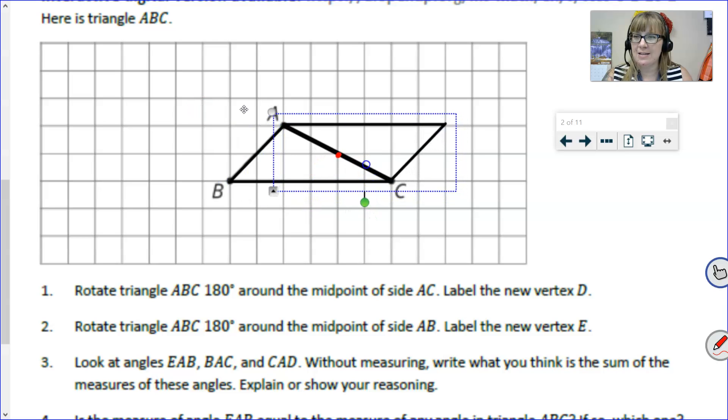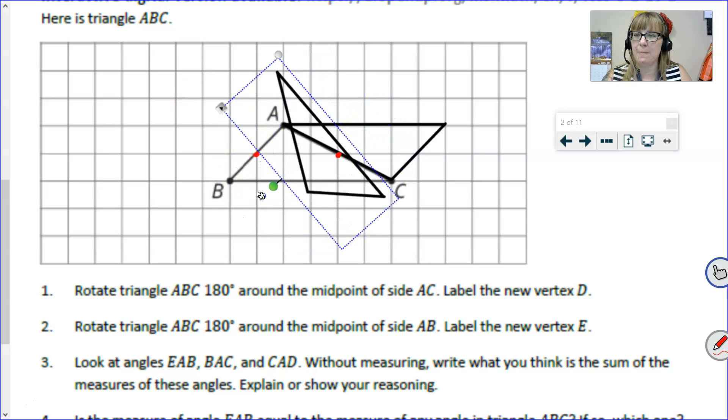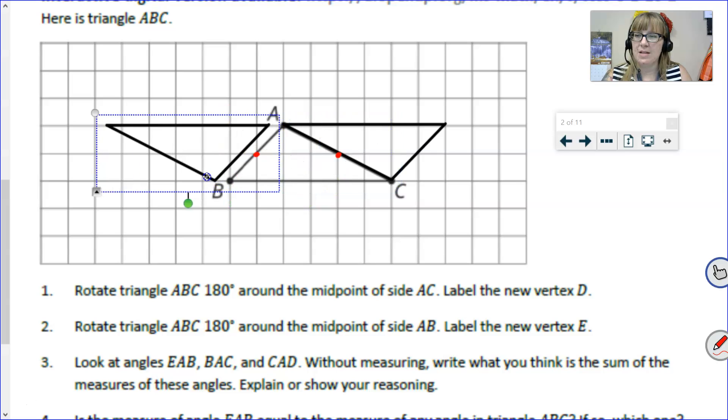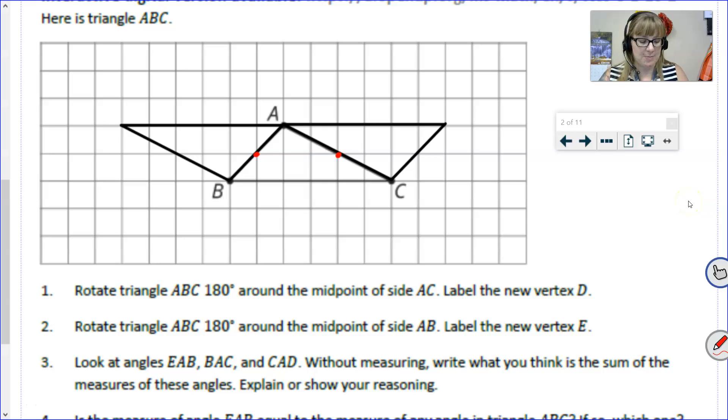I'm rotating it now, and of course I'm not using that geometry software, so I've got to move it into place, and that is the new position there. Step one completed. Step two says rotate triangle ABC 180 degrees around the midpoint of side AB this time. Now I'm finding the midpoint of side AB. There's that midpoint, rotating 180 degrees, which I hope you're doing in the applet. It is going to get it into that position.